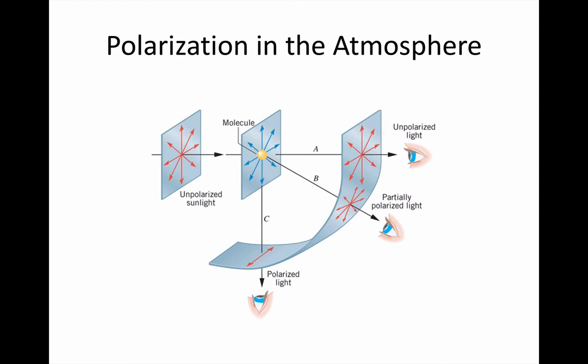Now the one direction that those electrons can't emit light at is vertically. However, electrons that have been made to oscillate horizontally can emit light vertically. So the observer underneath, who sees ray C, will see polarised light.